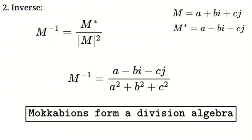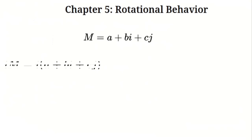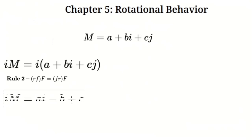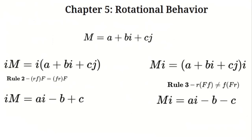Multiplying by i or j introduces rotations, similar to what happens with complex numbers and quaternions. For example, multiplying a Mokabian by i gives i × (a + bi + cj) = ai − b + c, suggesting a structured rotation along an axis. Similarly, multiplying by j rotates in a different direction. Unlike quaternions, which encode hyperspherical rotations, Mokabians exhibit a cube-like rotational structure in 3D space.